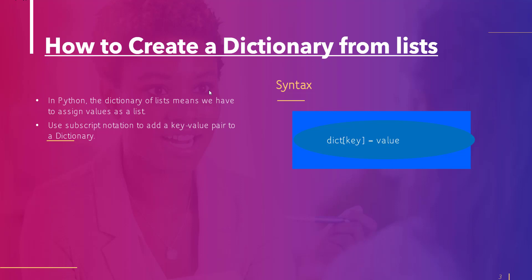Here is the syntax of subscript notation that you can use in an example. In this syntax we have mentioned that dict[key] equals to value. This syntax indicates we have to add a key-value pair to a dictionary. An important point is that if the key already exists in the dict, then the old value is overwritten and replaced with the new value.